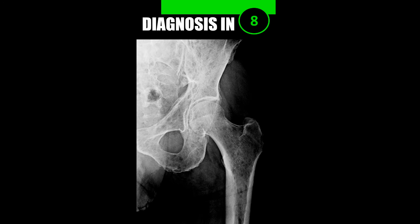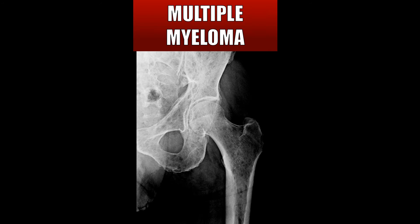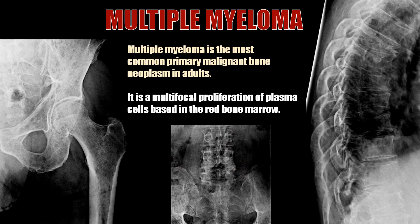Case number six: this is multiple myeloma demonstrating numerous locations of punched out lytic lesions. Multiple myeloma is the most common primary malignant bone neoplasm in adults, and in this case you can see multiple punched out lytic lesions scattered throughout the bones.